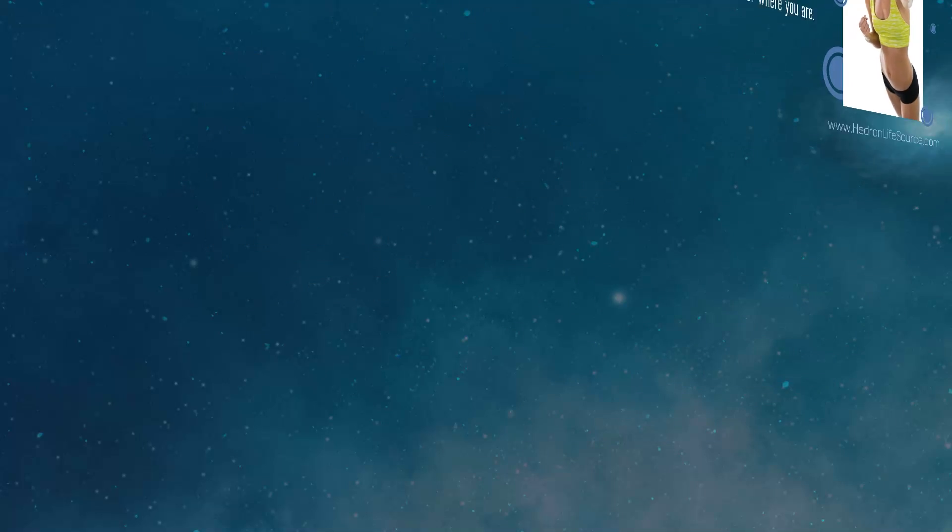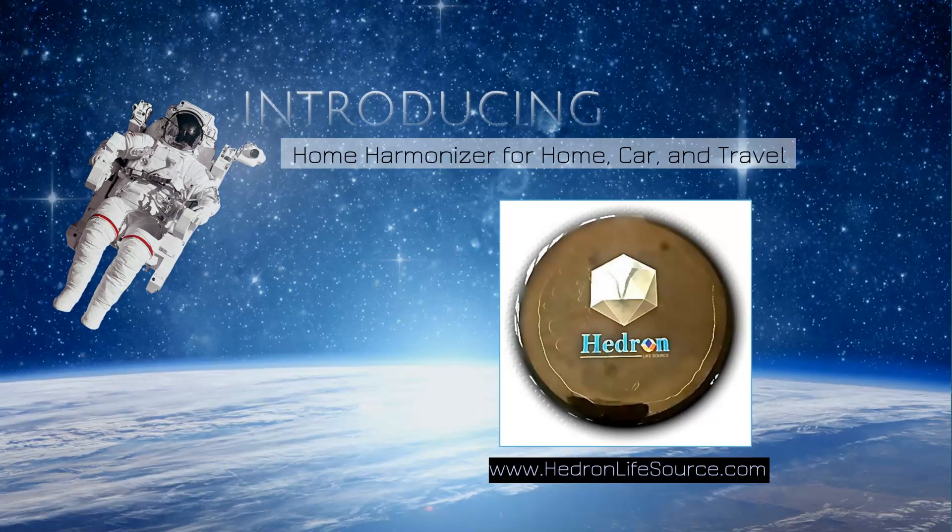It also protects against geographic stress as well. Moving on to our home harmonizer. This device has everything the cell phone harmonizer and the body shield have in it, just in different proportions and specific geometry is involved also with the making of this. This covers 1,000 square feet in a home. Now, if you have a bigger home, you're going to need more of these.